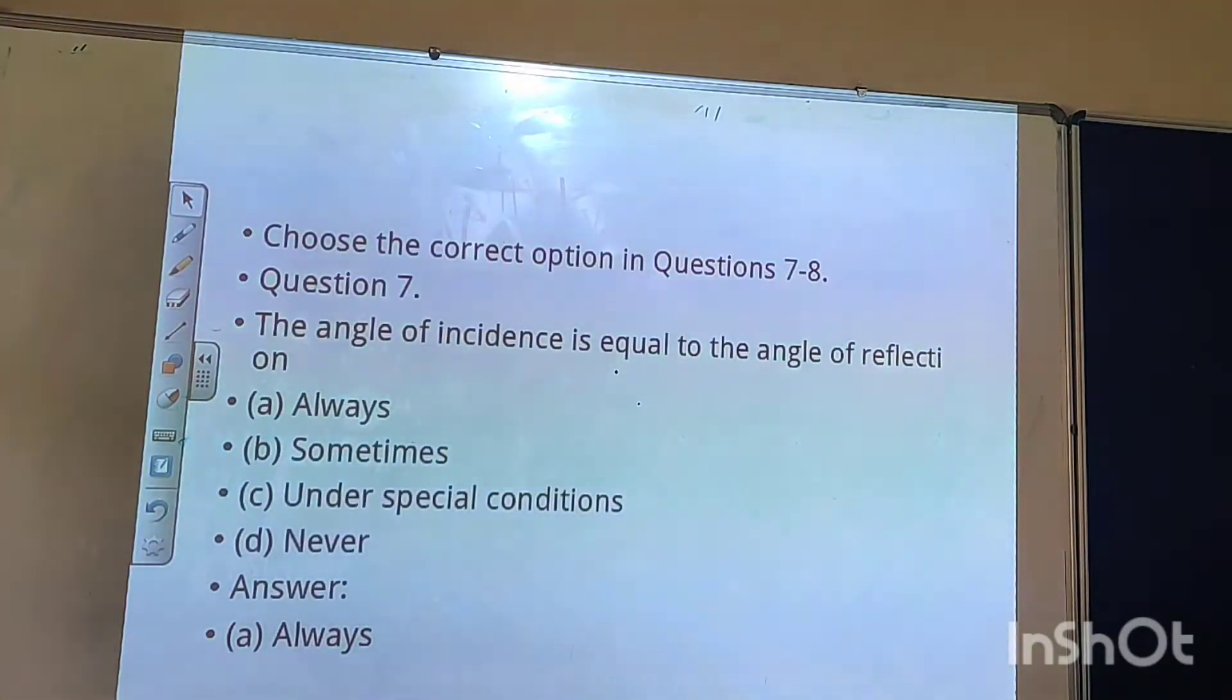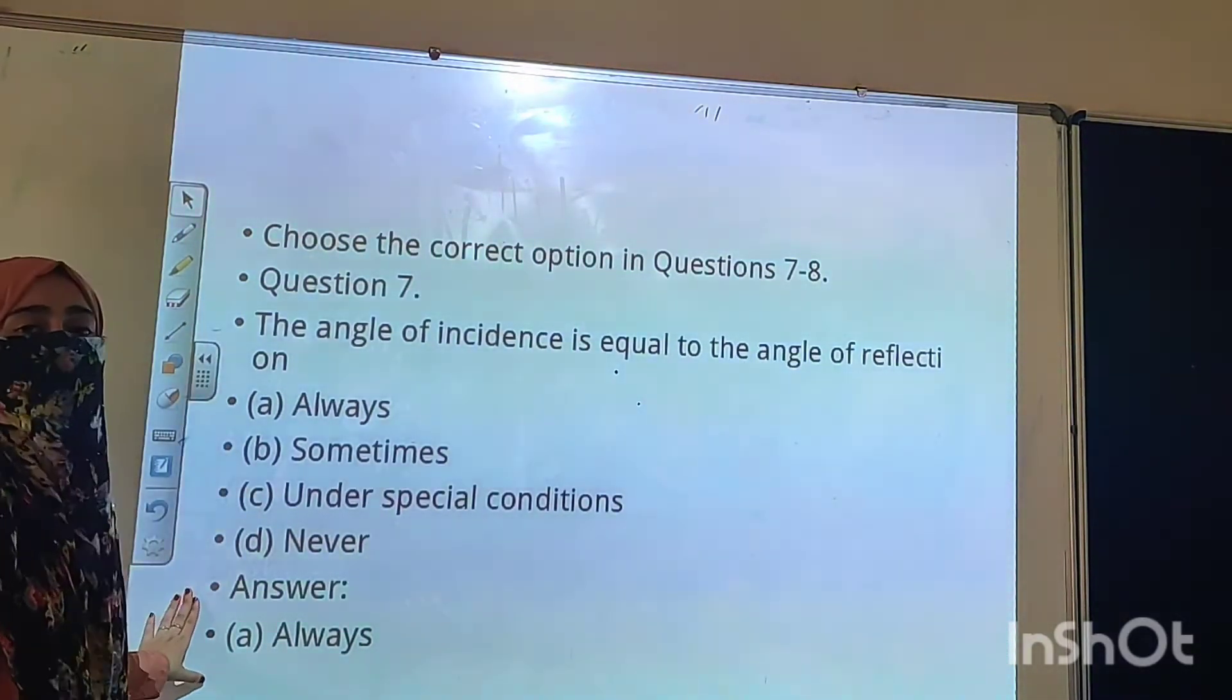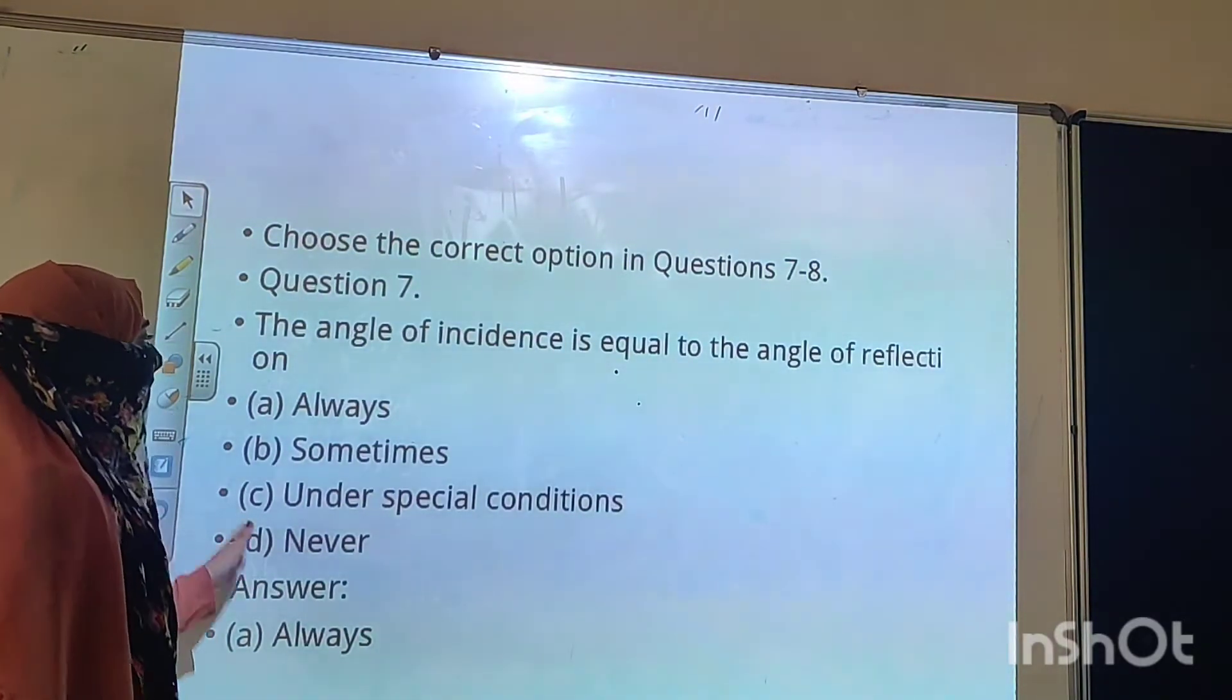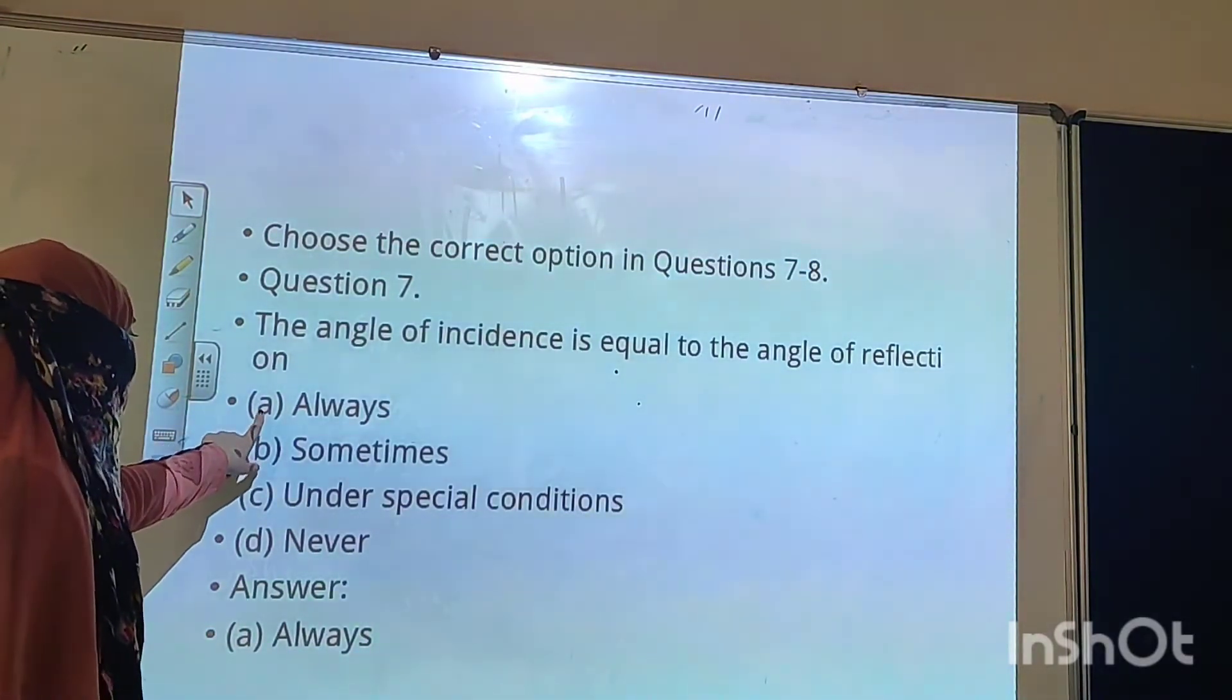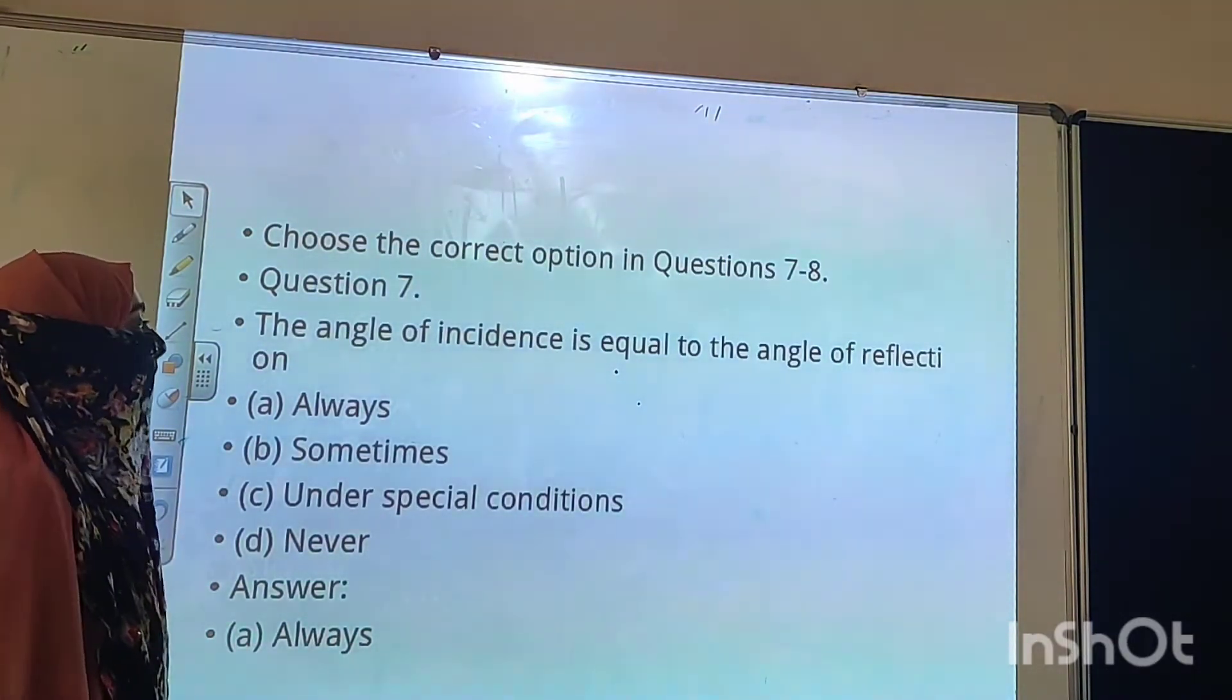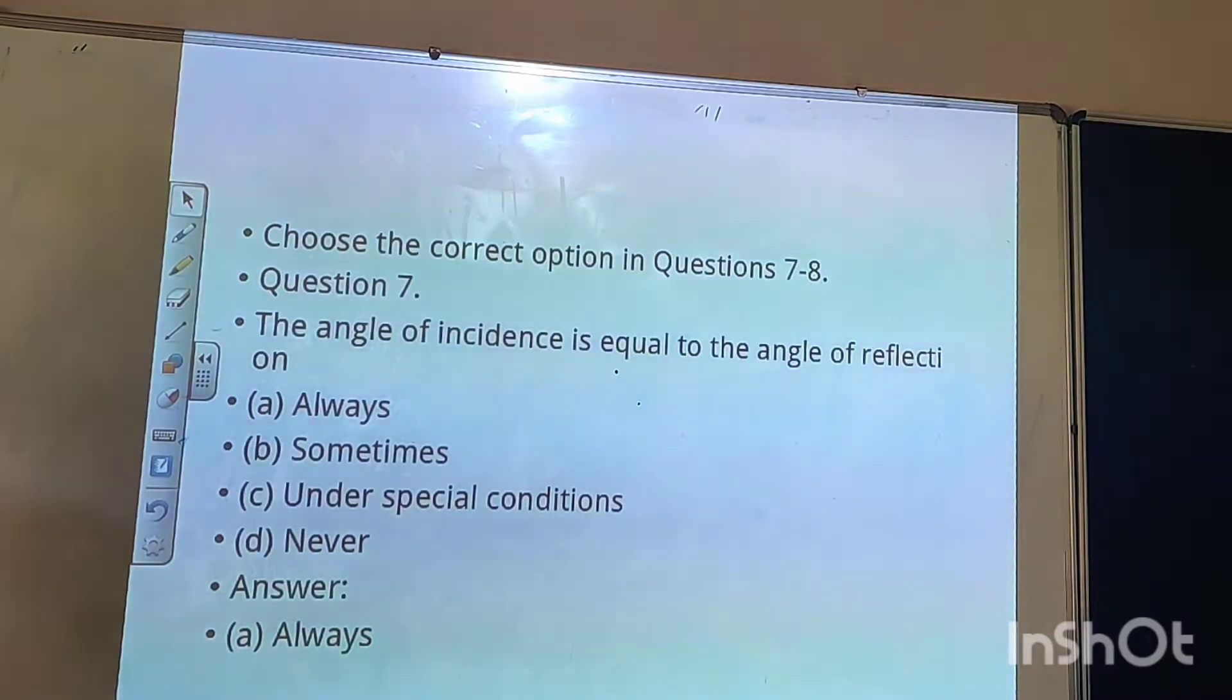Let's move to the next question. Choose the correct option from questions 7 and 8. No need to copy these options. You can copy the question and then directly write down the answer. Question 7: The angle of incidence is equal to the angle of reflection. The options are always, sometimes, under special conditions, and never. The angle of incidence is always equal to the angle of reflection.